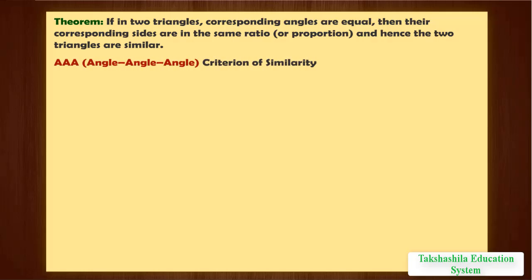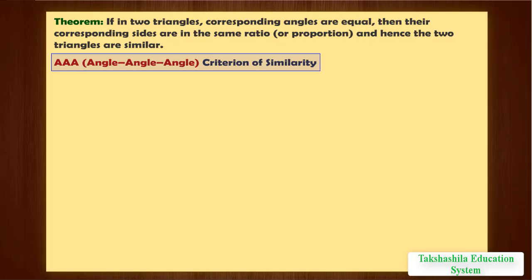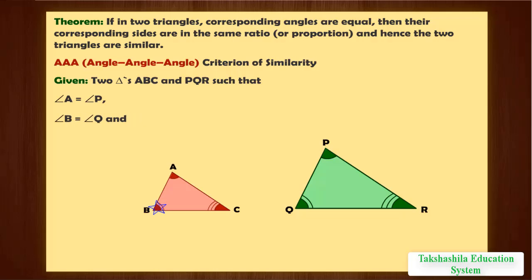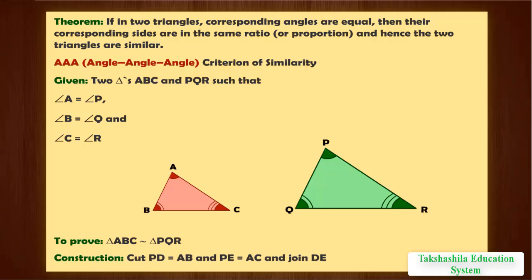Let us state the AAA criterion in the form of a theorem: if in two triangles corresponding angles are equal, then their corresponding sides are in the same ratio or proportion, and hence the two triangles are similar. This is referred to as the AAA — Angle-Angle-Angle — criterion of similarity. We are given two triangles ABC and PQR such that angle A equals angle P, angle B equals angle Q, and angle C equals angle R. We need to prove triangle ABC is similar to triangle PQR. For the proof, cut PD equal to AB and PE equal to AC, and join DE.